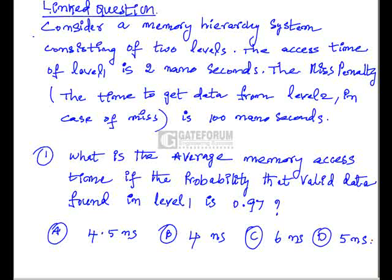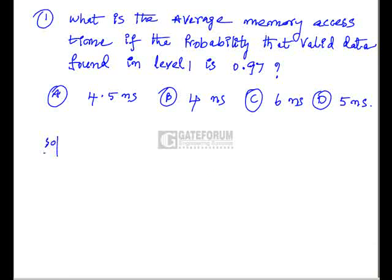What is the average memory access time if the probability that valid data found in level 1 is 0.97? That is the first question. So we can have the solution like this. Let us suppose the percentage of probability that valid data found given is 0.97.